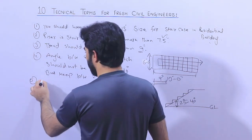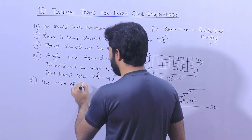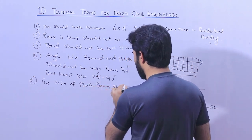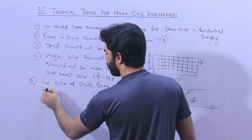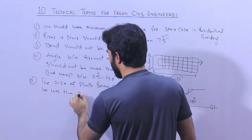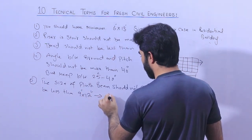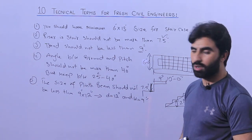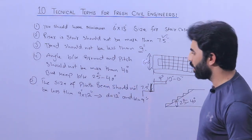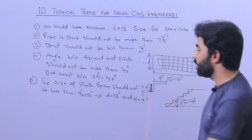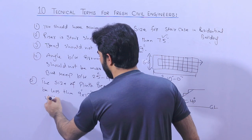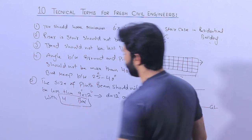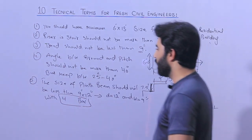The fifth term is the size of the plinth beam. The plinth beam should not be less than 9 inches by 12 inches — where the depth is 12 inches and the width is 9 inches. For a normal residential building of G plus one, you can keep 9 by 12 inches, but remember to use a minimum of four bars.